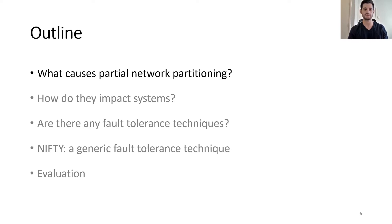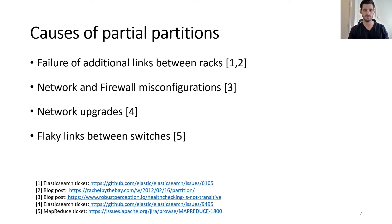So let's begin by answering the first question: what causes partial network partitioning failures? We looked into the literature and publicly available network failure reports. Unfortunately, we could not find any studies that detail the causes of partial partitions. However, we found numerous reports that describe partial partitions. From these failure reports, the main causes seem to be failure of additional links between racks, network and firewall misconfigurations, network upgrades, and flaky links between switches.